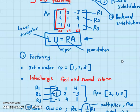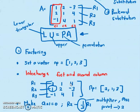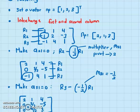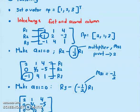In the previous video I covered Step 1: factoring. We set up a vector NP, always starting with 1, 2, 3. We search the first column for the largest magnitude — since 2 is the biggest, we swap row 2 with row 1. Because the swap happens, we update the NP vector to 2, 1, 3. The goal for the first column is to make entries a21 and a31 equal to zero.